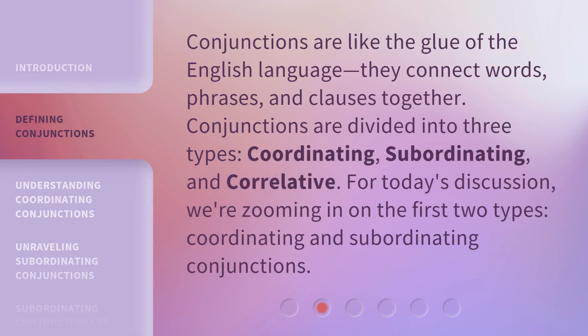Conjunctions are like the glue of the English language. They connect words, phrases, and clauses together. Conjunctions are divided into three types: coordinating, subordinating, and correlative. For today's discussion, we're zooming in on the first two types — coordinating and subordinating conjunctions.